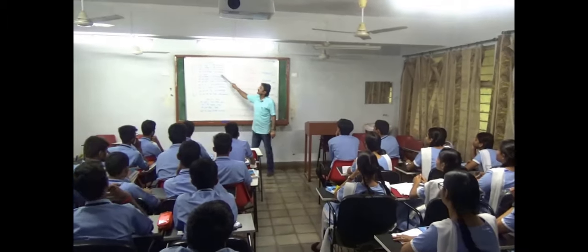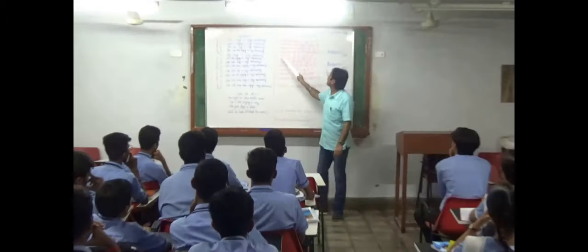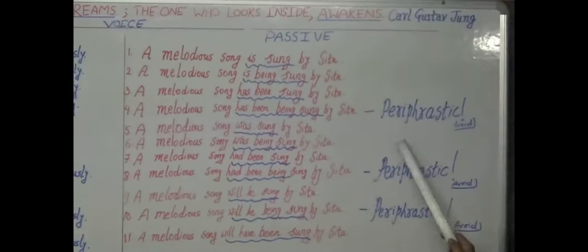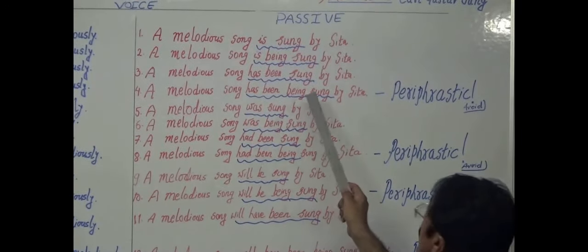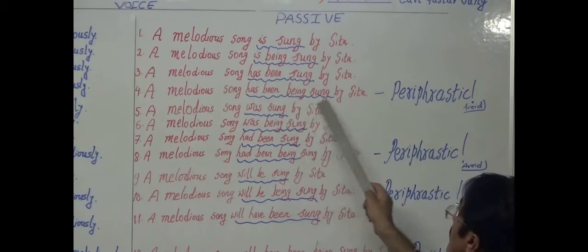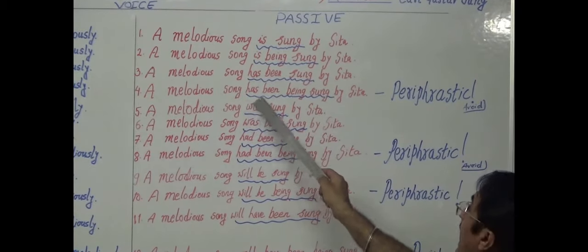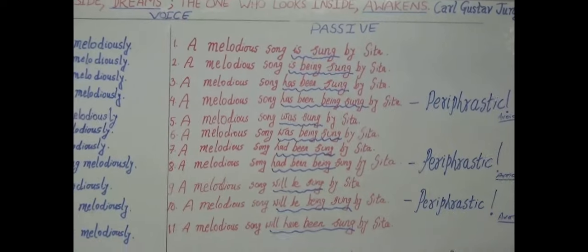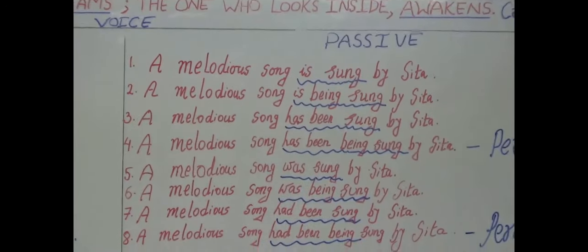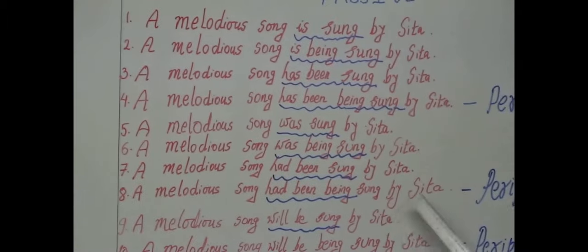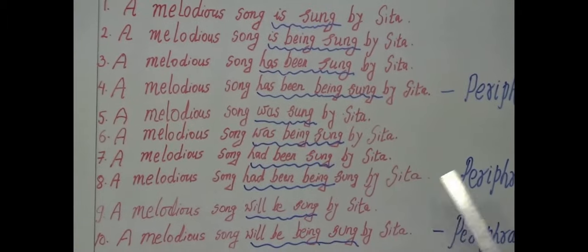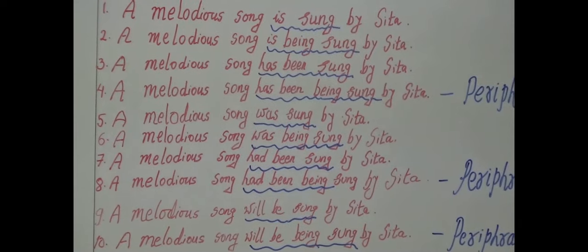Present perfect continuous: 'Sita has been singing a song.' The passive would be 'a melodious song has been being sung by Sita' — but this is periphrastic, using too many verbs. Better to avoid such structures. Similarly, 'Sita had been singing a song' → 'a melodious song had been being sung by Sita.' Again, very periphrastic — don't use it.